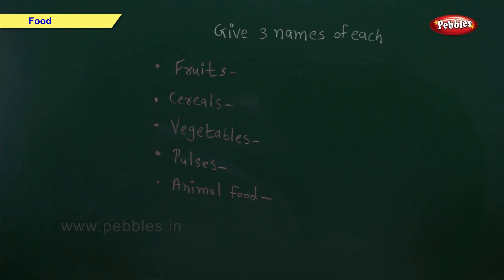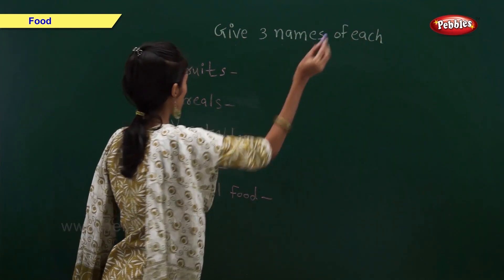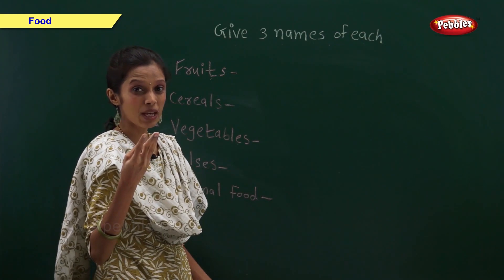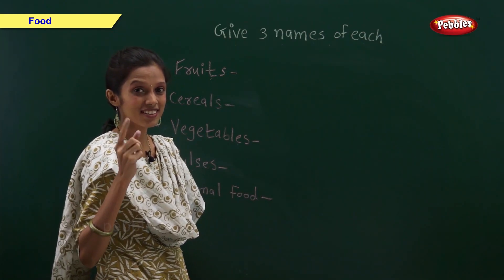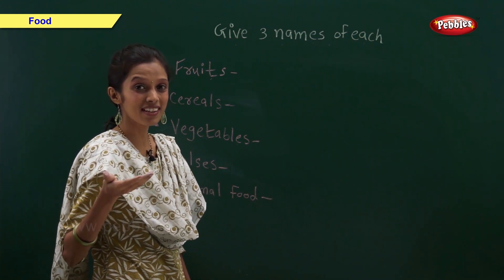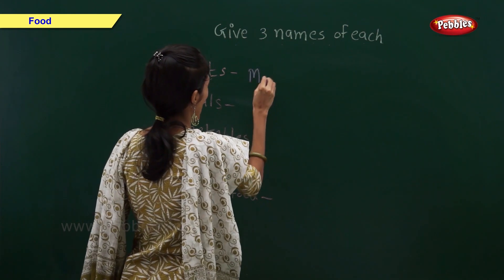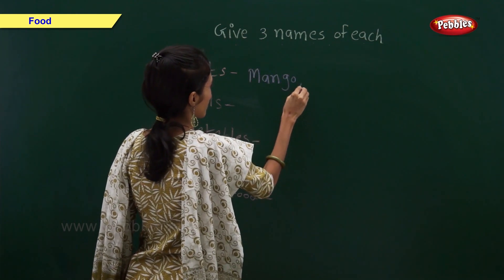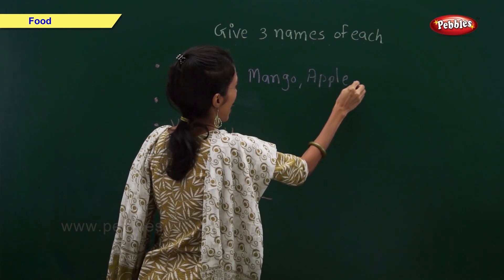Give three names of each. Give me three examples of fruits. Remember, I have shown you the pictures. Yes — mango, apple and orange.